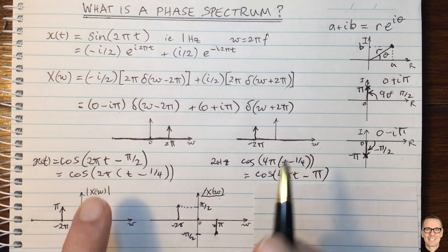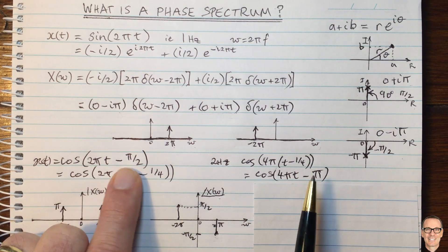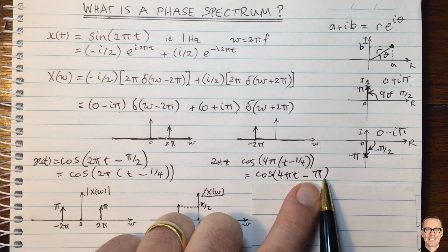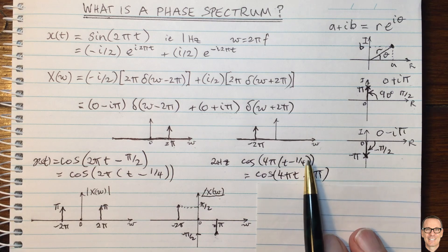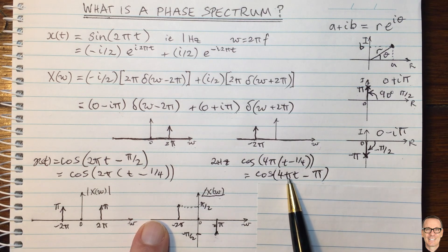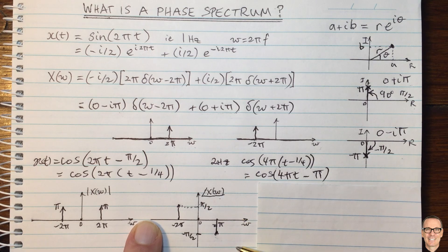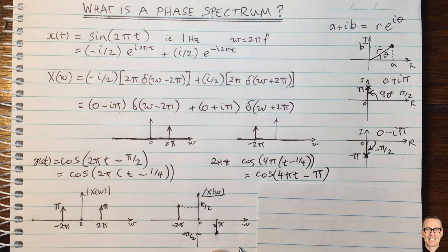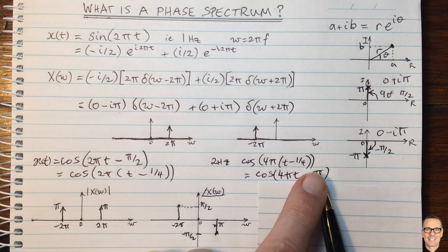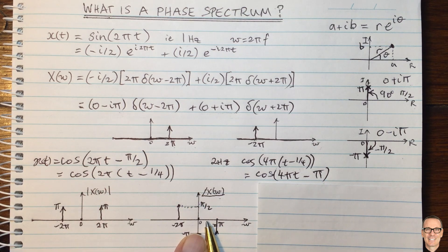For the same time shift, the phase shift will be different. The 1 Hz waveform had a phase shift of pi over 2; the 2 Hz waveform has a phase shift of pi. If you halve the frequency for the same quarter-second time offset, the phase offset halves to pi over 4. So the phase response is a linear response — doubling the frequency doubles the phase shift, which is why it's called linear phase.